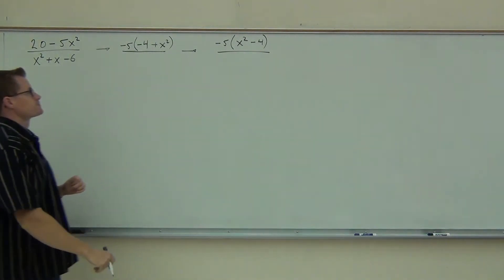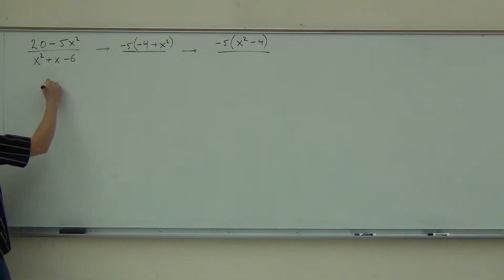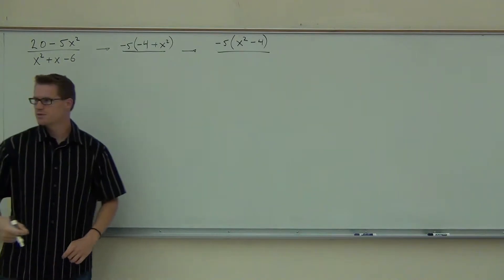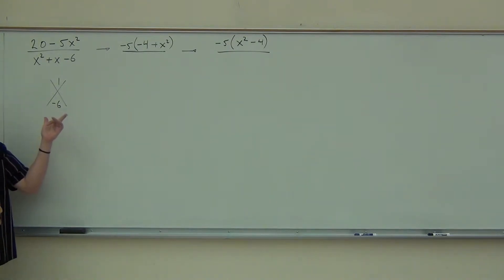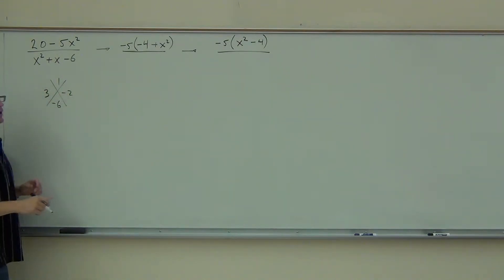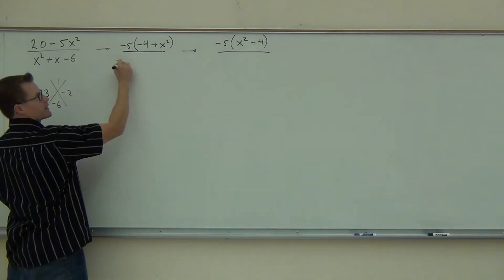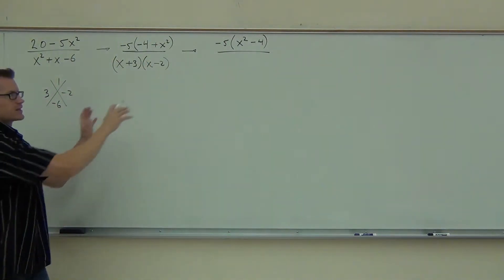Let's work on the denominator now. Can we factor that thing? We look for two numbers — I'm going to start doing these more quickly because we've been practicing this. The 1 and the negative 6, we're going to get 3 and negative 2. This goes directly to my factors, so right here I write x plus 3, x minus 2.